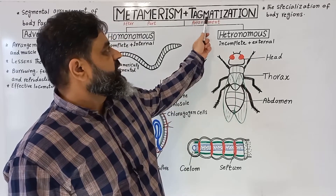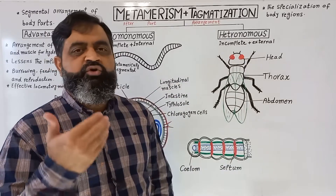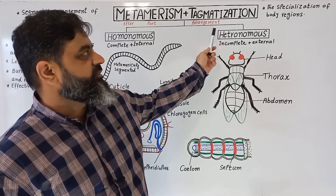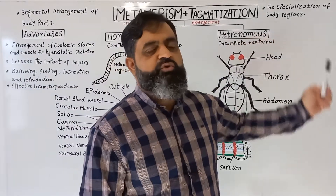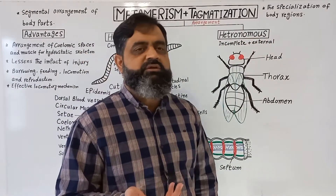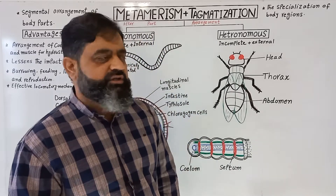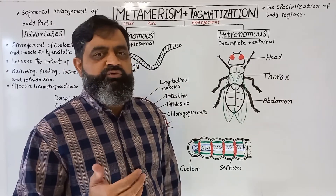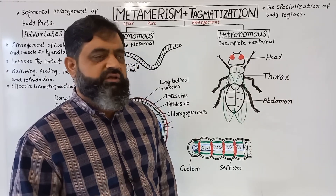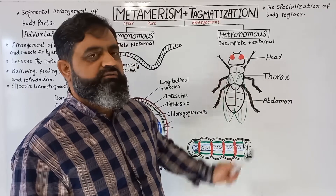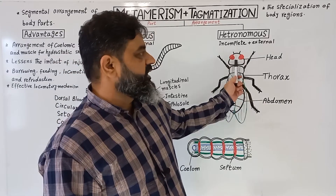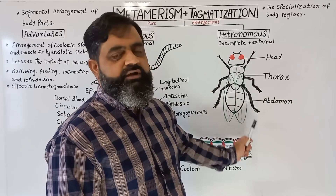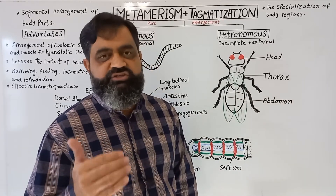If we look at the meaning of tagma, tagma means arrangement — the arrangement of body parts in different styles. By definition, tagmatization is the specialization of body regions. It is basically metamerism but in a different context. To understand this, I have taken the example of an arthropod. As you know, arthropods include all the insects, and their body has been divided into three tagmata: the first tagmata is the head, the second tagmata is the thorax, and the third tagmata is the abdomen. That is why they are known as tagmatized.